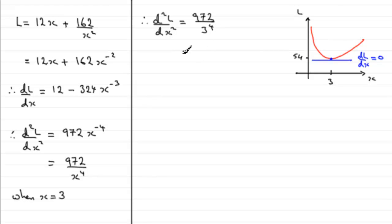And when it comes out is 12, and 12 is a value that is greater than 0, and that indicates that we've got a minimum point.